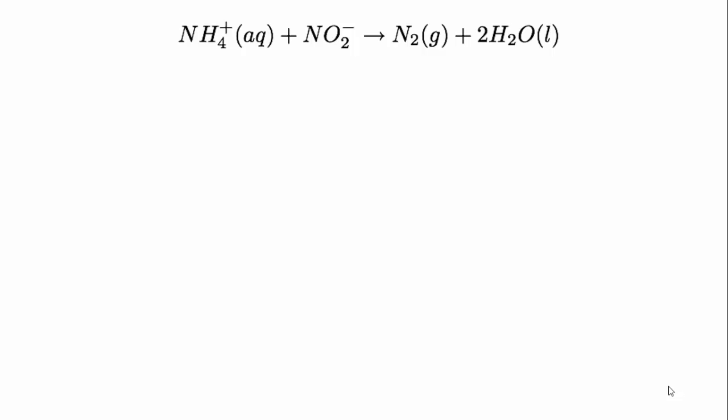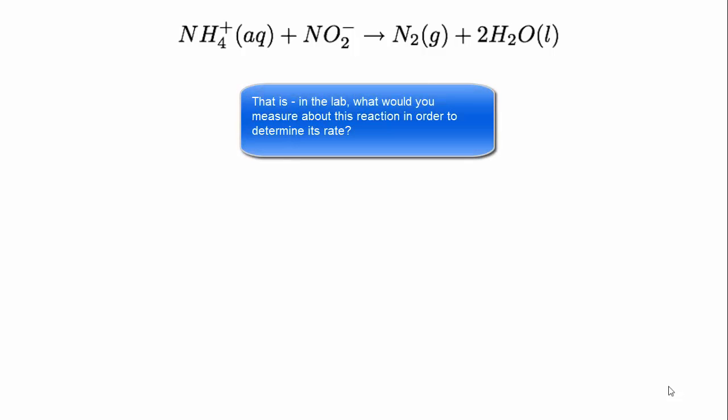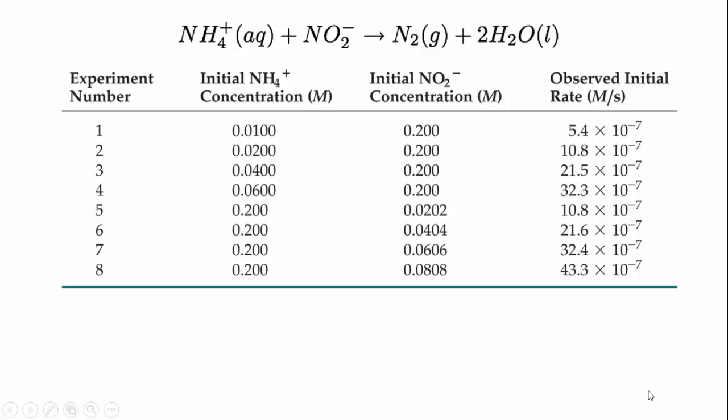Here's a question to think about: for this particular reaction, what would be a suitable experimental method of measuring the rate? Now pause the video and look at this data. Using the same process we used for the prism, see what you can get out of it. What's the rate proportional to? Can you write the full expression? Can you figure out a constant that converts the expression into a proper equation? Pause the video now and see what you can get out of it.